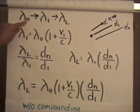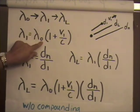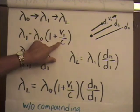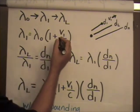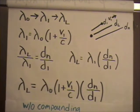So the first step is straightforward. Wavelength one equals the original wavelength times one plus v1 over c, which is a standard Doppler redshift formula.